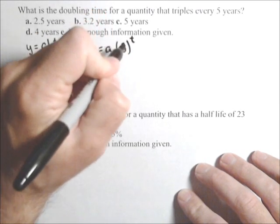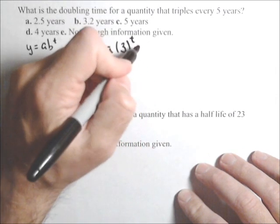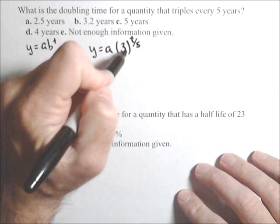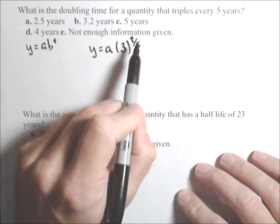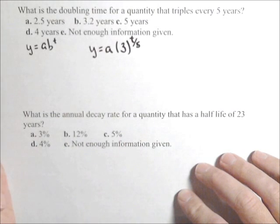If all I do is raise it to the t, that's going to triple every year. But, I want it to triple every five years. So, what I do is I just divide my t by five, because what that does is every time t's a multiple of five, I multiply it by another three. And, I've already got my model.